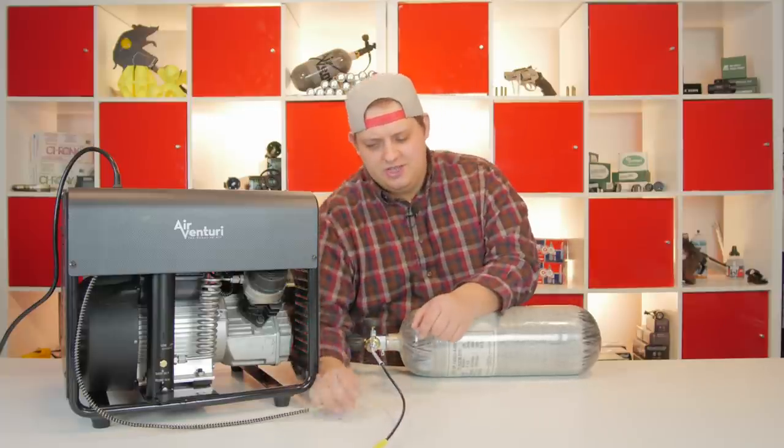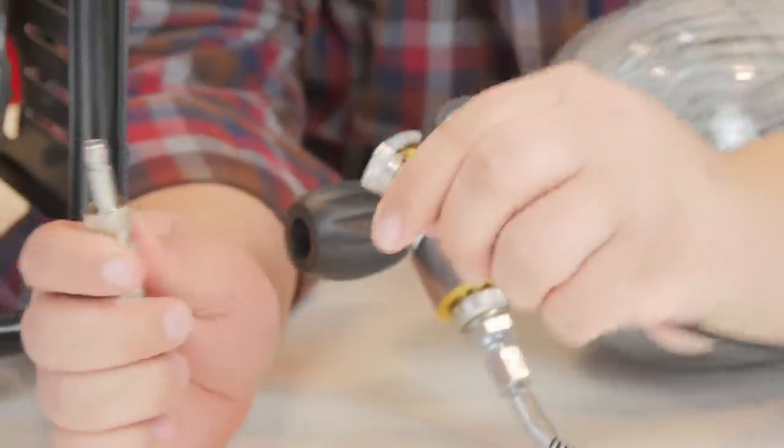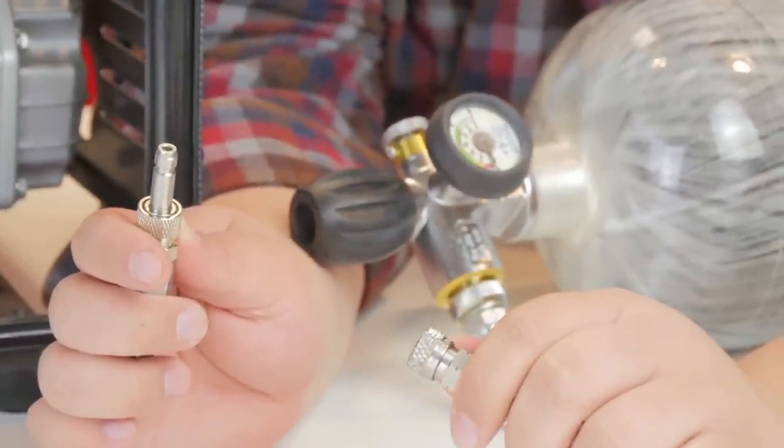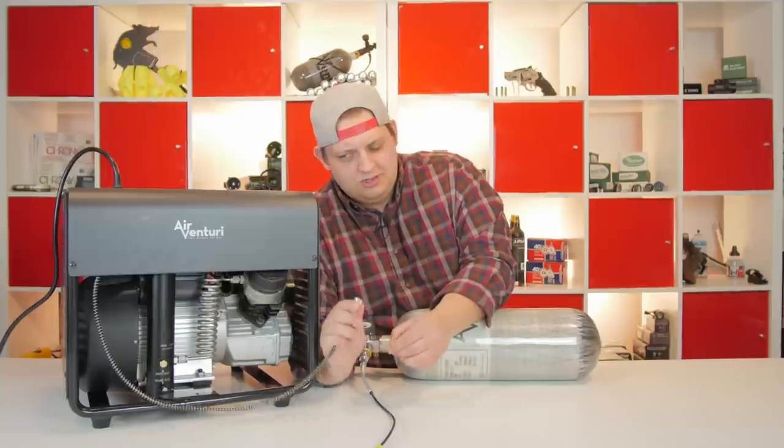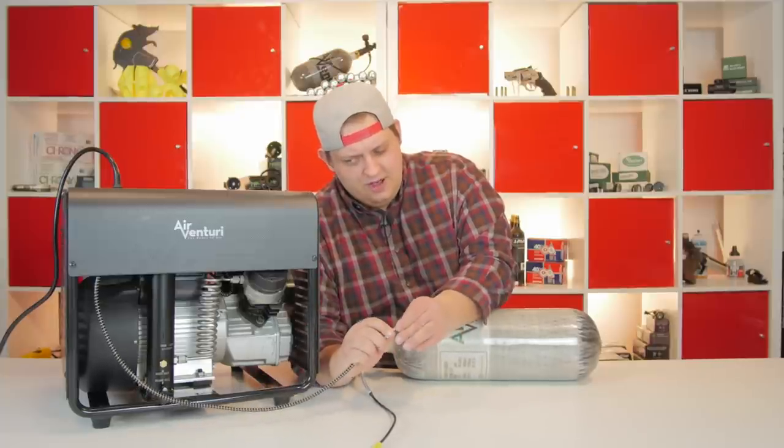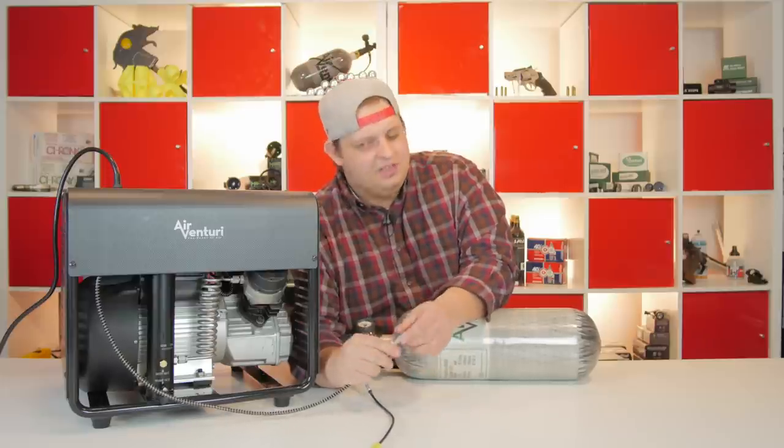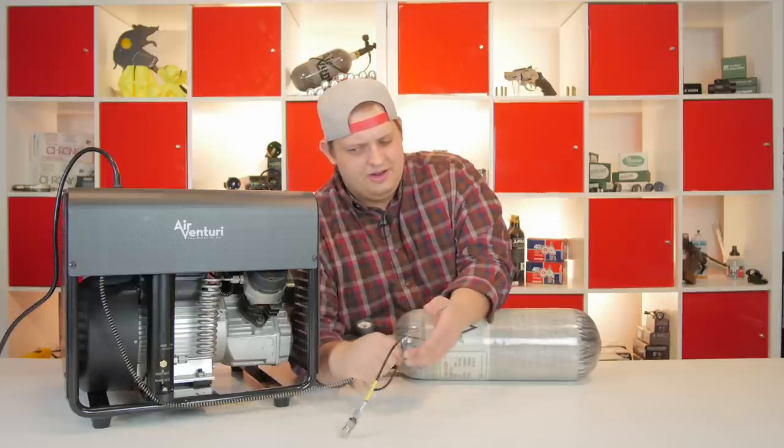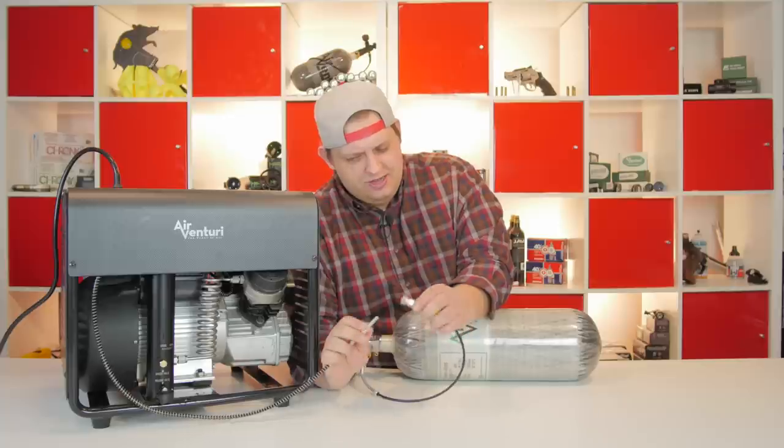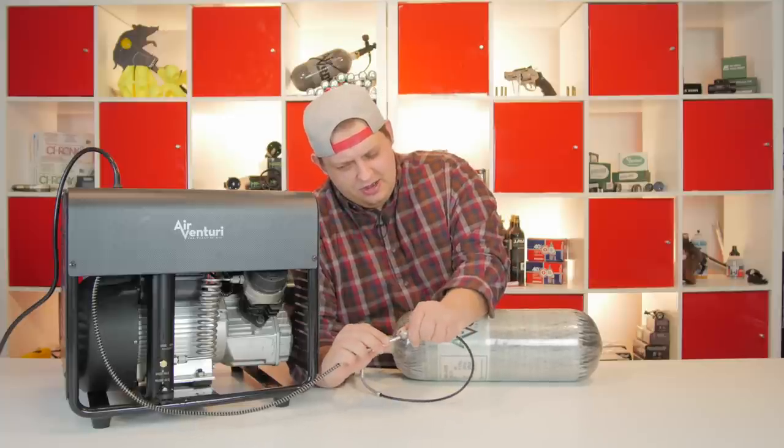So what we're going to need to use is we're going to use the male-to-male adapter, and this comes with your compressor. It'll be in your bag of extra parts. So you're going to put one end into the foster connection on your compressor, and it's a little bit of a tight fit, which is good. That means that everything's going to be solid in there. And then you're going to put the other end into the foster connection on your tank.